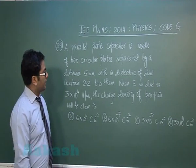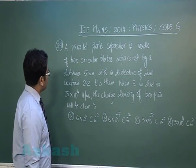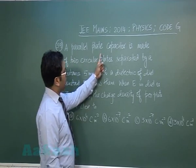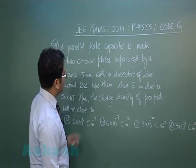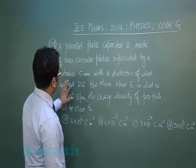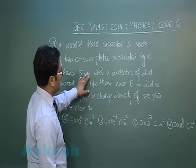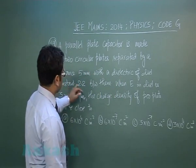Let's move to question number 39, which is from electrostatics. A parallel plate capacitor is made of two circular plates separated by a distance with a dielectric of dielectric constant 2.2.